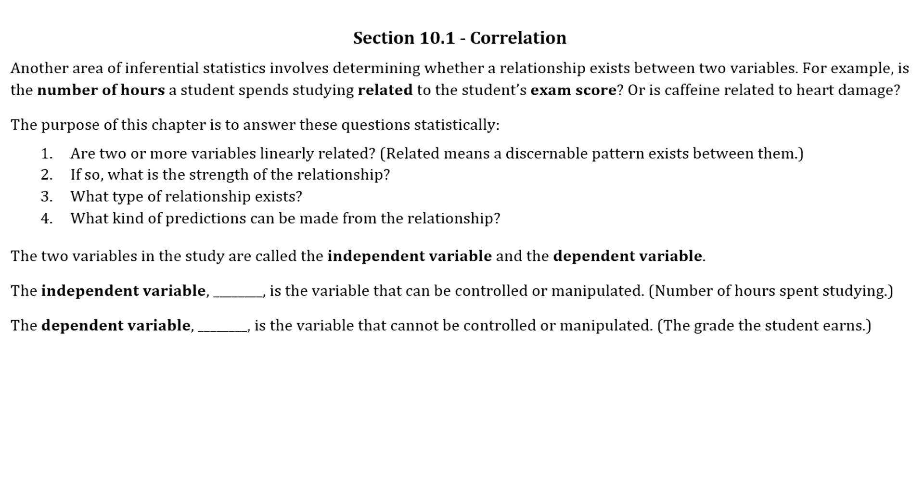Number three is what type of relationship exists, so we can classify it more specifically. And ultimately we want to see what kind of predictions can be made from that relationship.